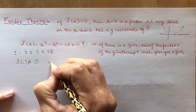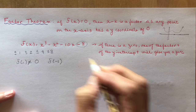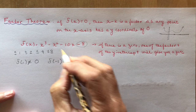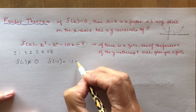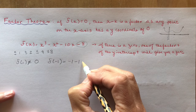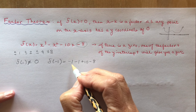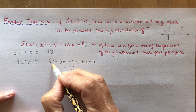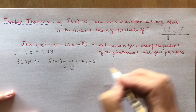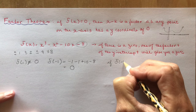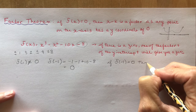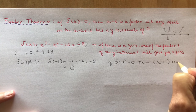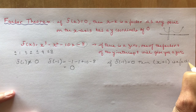So let's do f at minus 1. Minus 1 cubed is minus 1, minus 1 squared is 1 and then it would be minus, this gives me plus 10, minus 8 — and look at that, that's 0. So if f at minus 1 equals 0, then we can say that x plus 1 is a factor. That's one of my factors.